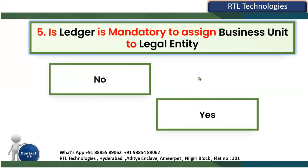The fifth and final question: Is a Ledger mandatory to assign a Business Unit to a Legal Entity? During the configuration of the Enterprise Structure, the hierarchy is: Ledger, then Legal Entity, then Business Unit. The question is: when assigning a Business Unit to a Legal Entity, is it mandatory that the Legal Entity is already associated with a Ledger, or can we assign it without that?